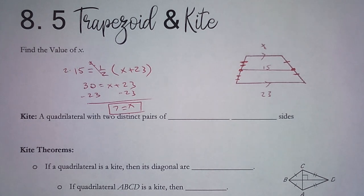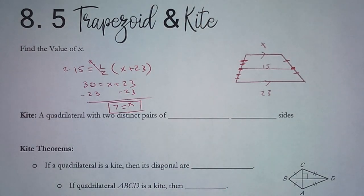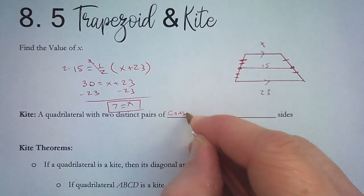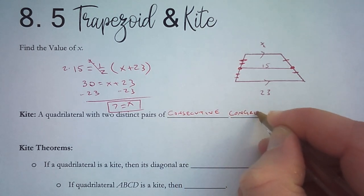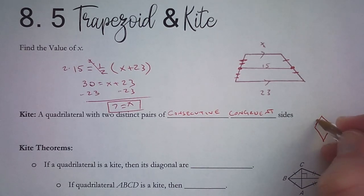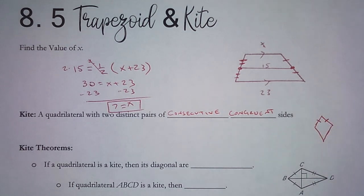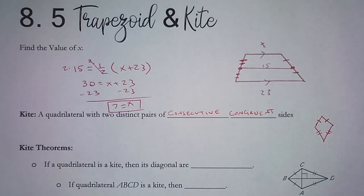Welcome back. Today we are going to continue our lesson on trapezoids and kites, and we're going to focus in now on the kite. A kite is a quadrilateral with two distinct pairs of consecutive congruent sides. Consecutive means two in a row — they are congruent — and then these two are also congruent, but they're not all congruent to each other. If all four were congruent to each other, it would be a rhombus.